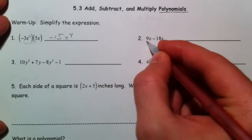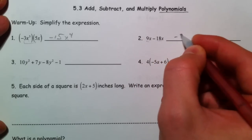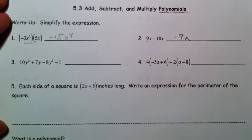9x minus 18x, those are like terms, so you could say negative 9, 9 minus 18 is negative 9x.